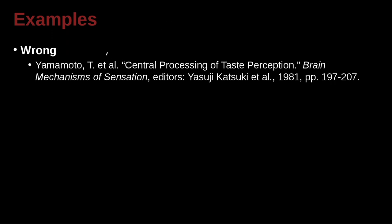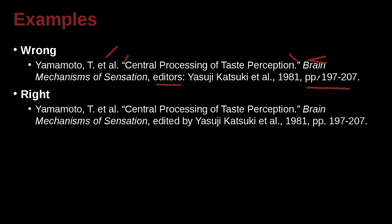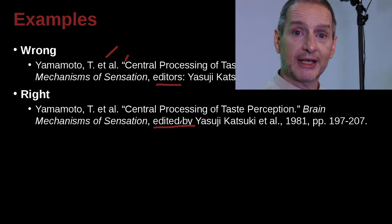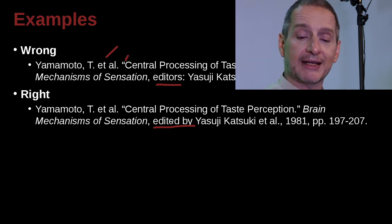Yamamoto, T., et al. — so we must have three or more authors. This is inside something larger, so we have the quotation mark: 'Central Processing of Faith Perception.' It's inside a book called Brain, Mechanisms of Sensation, and this book has editors. This came out in 1981, and these are the pages of the chapter we're citing. But the correct way to write that is 'edited by' — MLA is very clear on this; it wants you to write 'edited by,' not just 'editors.'